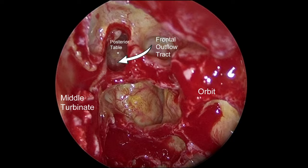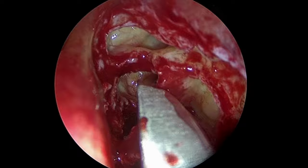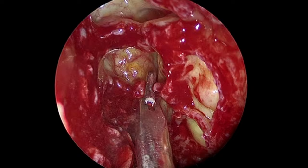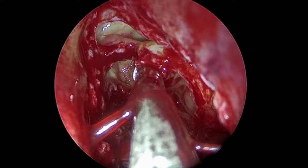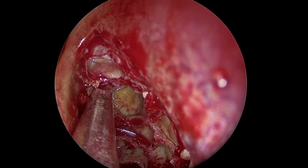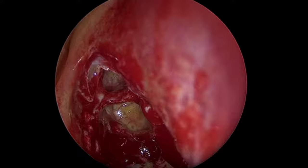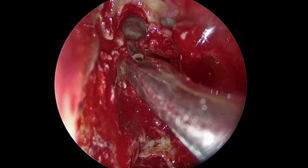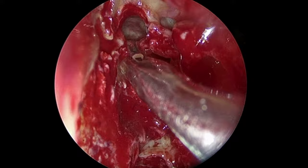Once the frontal drainage pathway is found, remnant agger nasi is removed using a combination of side-to-side and front-to-back through-cutting instruments, Hoseman punch, curved microdebriders, and frontal curettes. Finally, the posterior bony wall between the supraorbital ethmoid and the frontal recess is opened, enlarging the frontal recess and concluding this portion of the procedure.